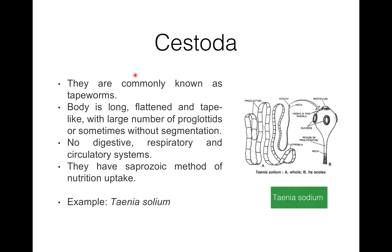Now, Cestoda — they are commonly known as tapeworms. They are endoparasitic flatworms. The body is long, flattened, and tape-like — segmented, elongate, flat, and ribbon-like. They have a large number of proglottids, or sometimes without segmentation.